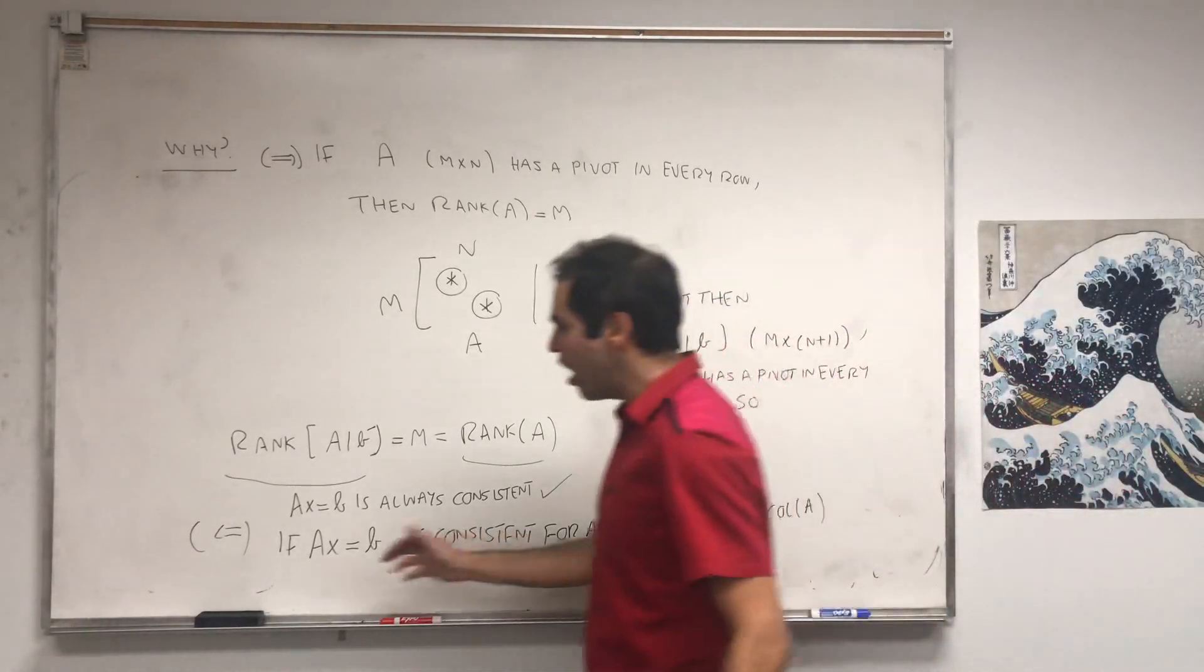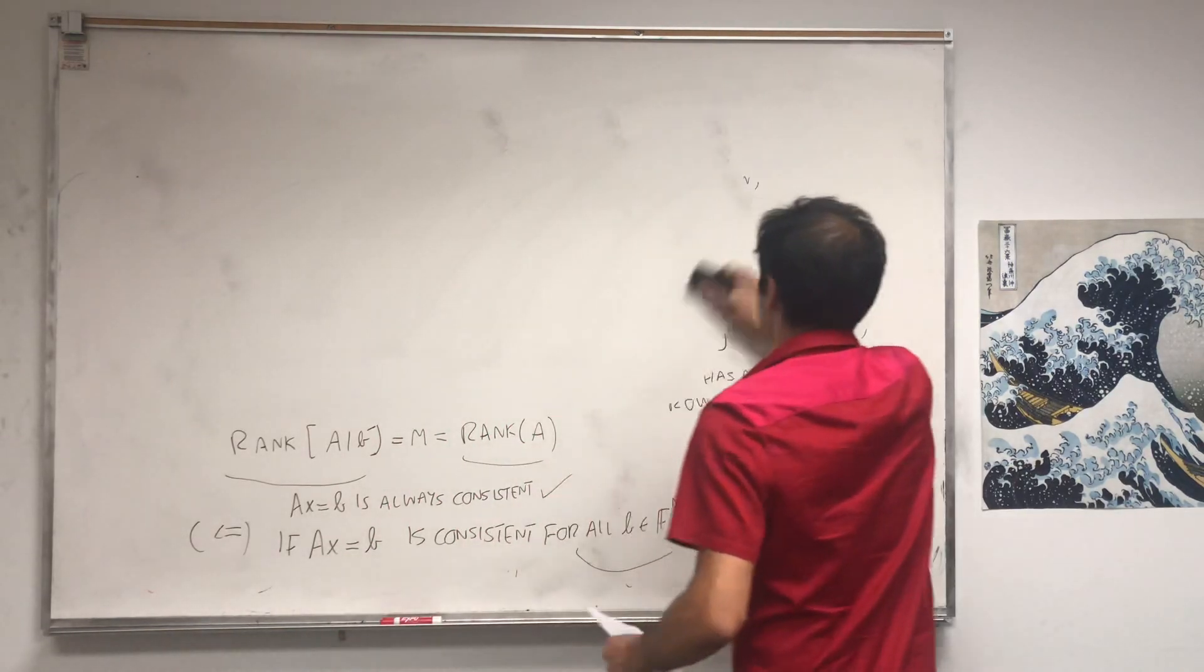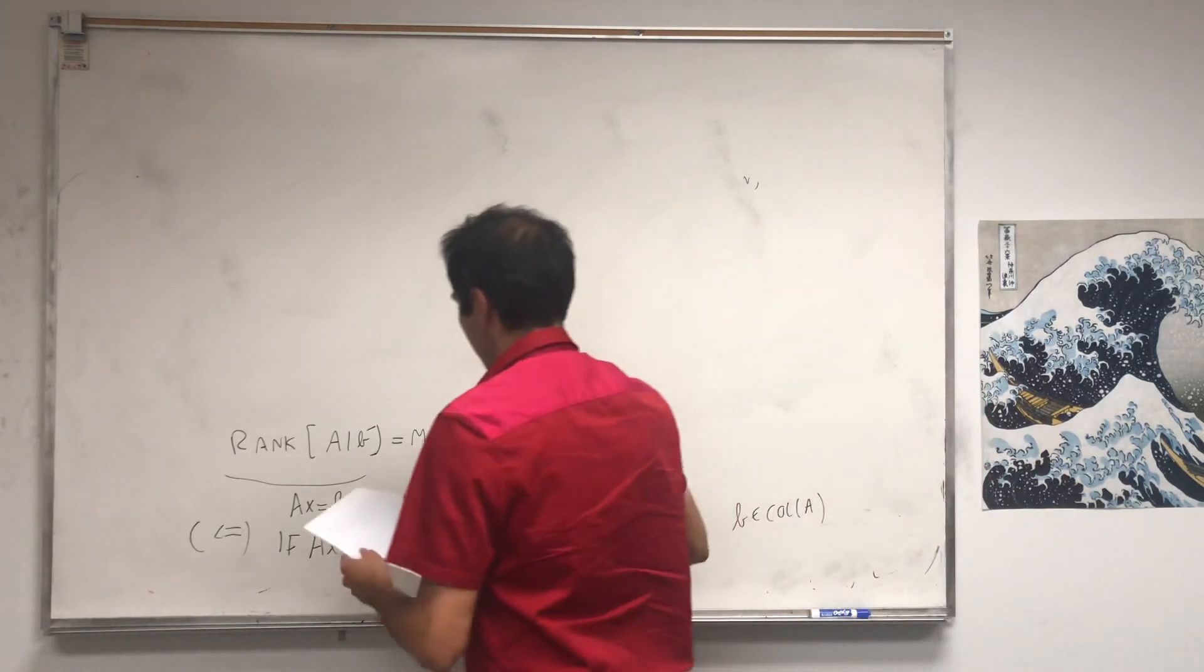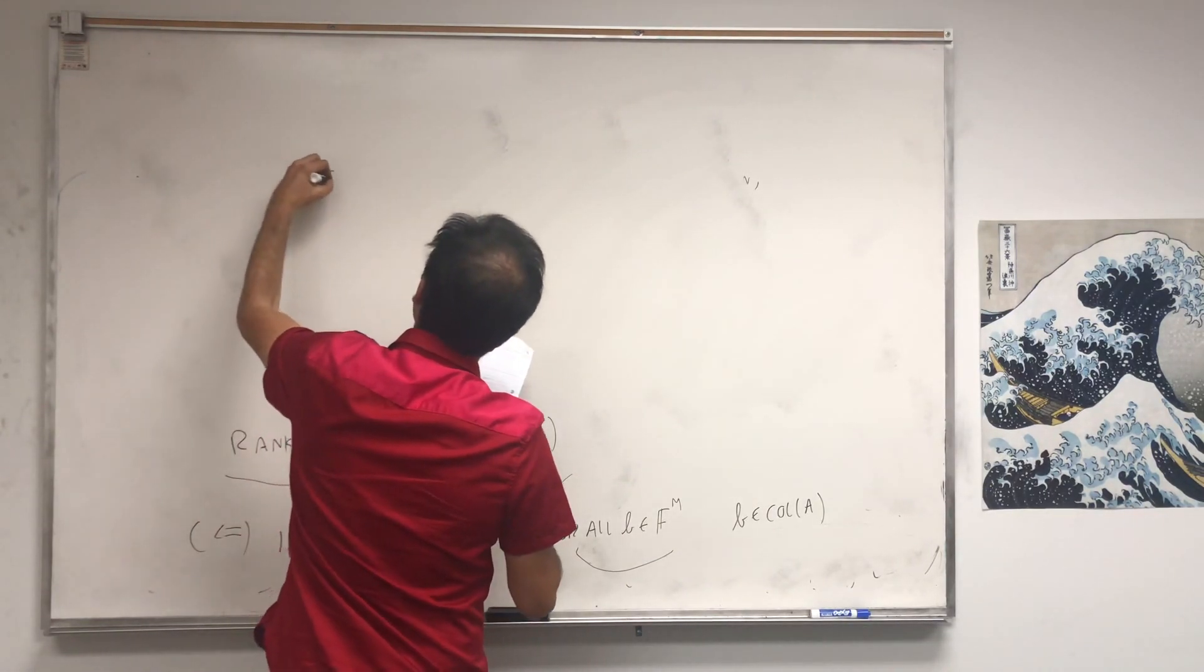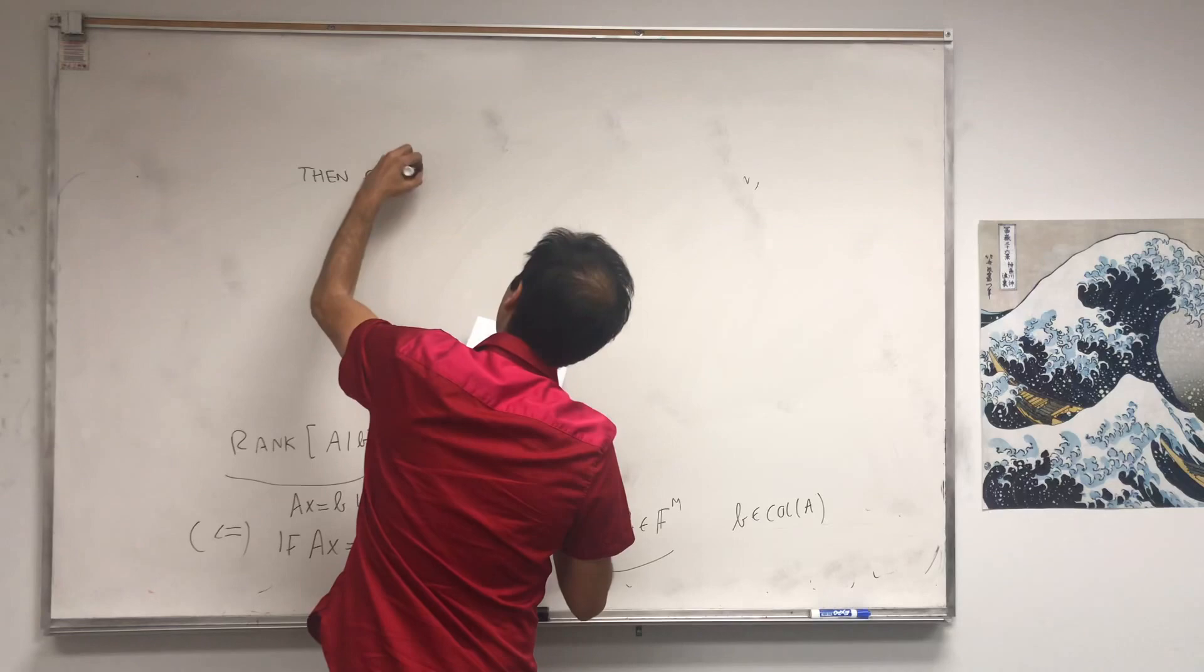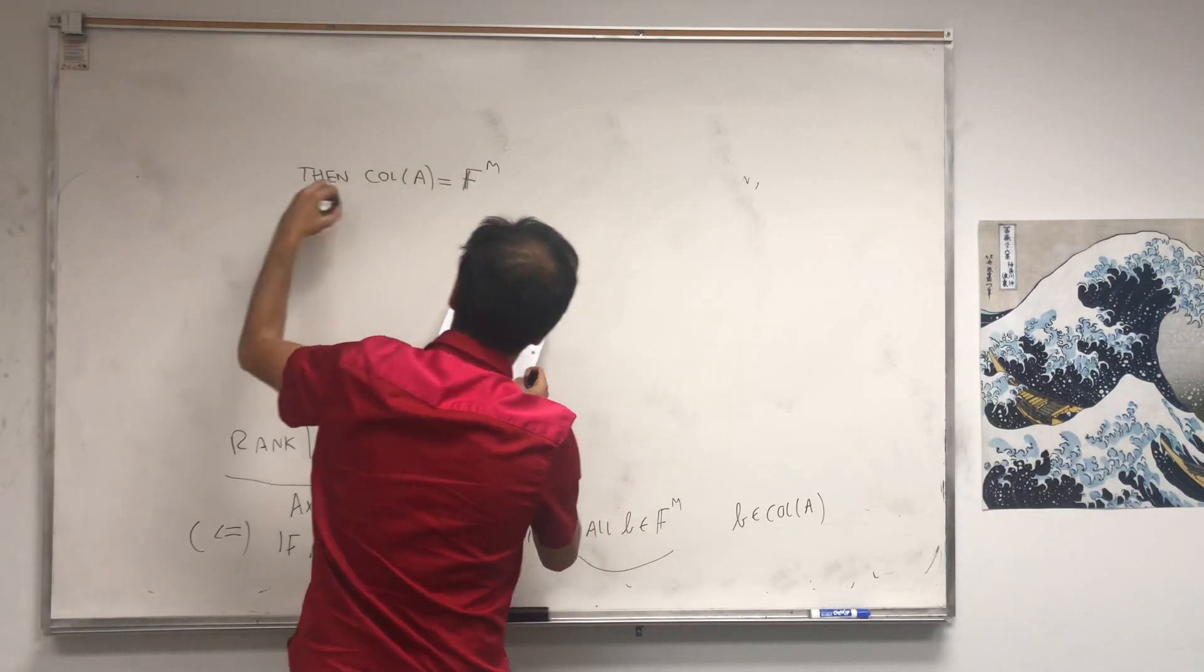So for any B in F^m or R^m, it's in the column space of A, so in particular, the column space of A is the whole space, it's all of F^m. So then, the column space of A is all of F^m.